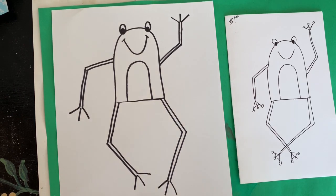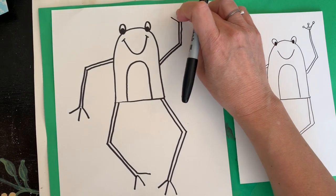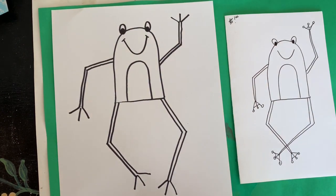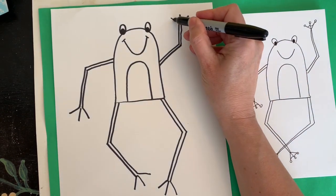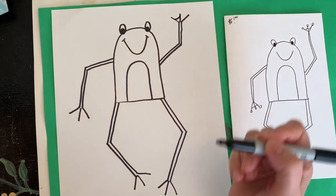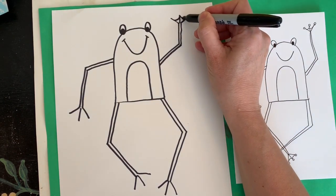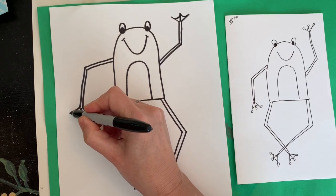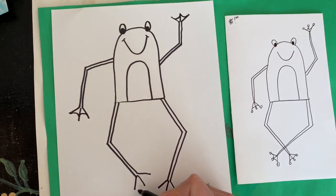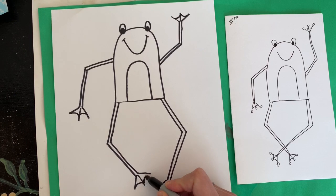Now frogs have webbed feet. That means that they have a little bit of skin in between their toes. In order to show that, I just did a little curve right like that. I'm going to do another curve here. I'm going to do that on all of mine, just like that.